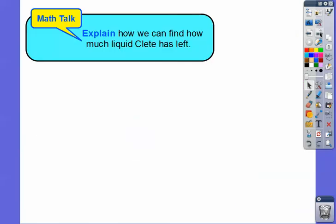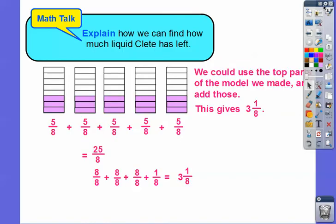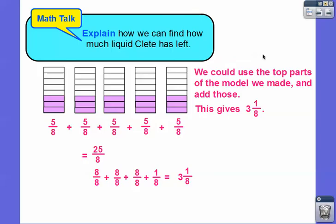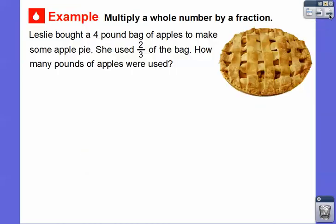Now, how much liquid does Cleet have left over that he didn't use? We can use the top parts of the model. If he used three-eighths, then he has five-eighths left in each container. Five-eighths times five equals twenty-five-eighths. Twenty-five-eighths breaks down: eight-eighths plus eight-eighths plus eight-eighths is twenty-four-eighths, plus one more eighth — so three and one-eighth. Eight goes into twenty-five three times with one left over, giving three and one-eighth.